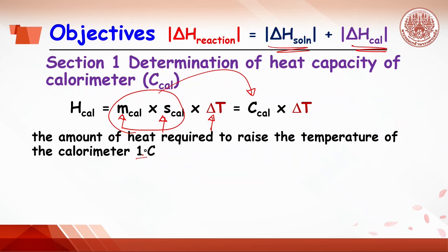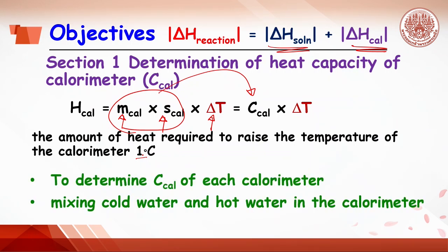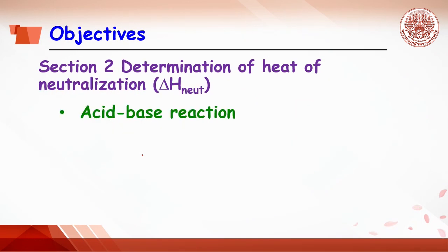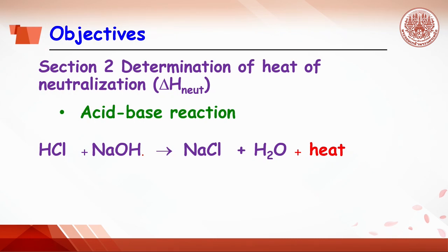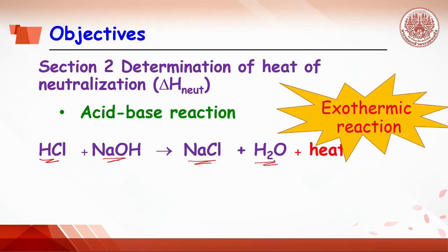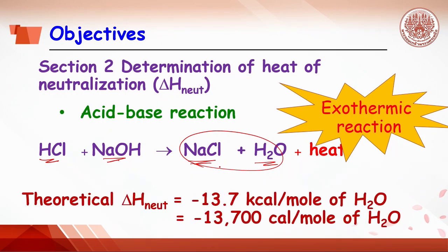The objectives of today's experiment are: Section 1 — Determination of heat capacity of calorimeter by measuring heat from the mixing of cold water and hot water. Section 2 — Determination of heat of neutralization. The reaction of acid and base, called neutralization, gives salt and water as products. In this section, neutralization of hydrochloric acid and sodium hydroxide is studied, yielding sodium chloride, water, and heat. The theoretical heat of neutralization of strong acid and strong base is equal to negative 13.7 kilocalories per mole of water, where the minus sign means the reaction releases heat — an exothermic reaction.